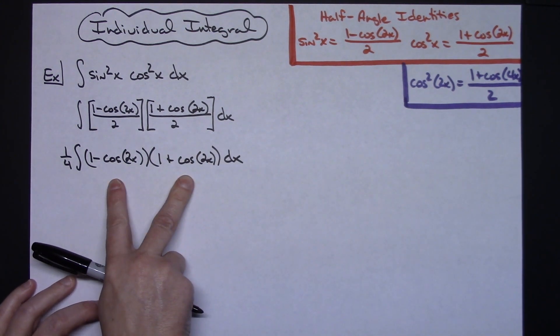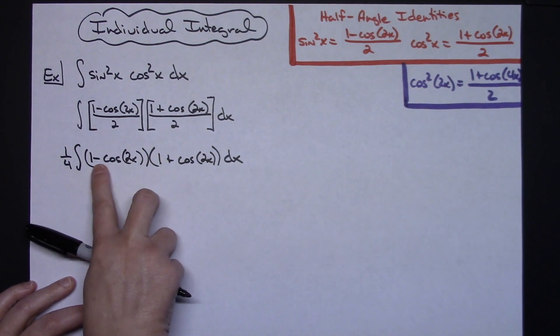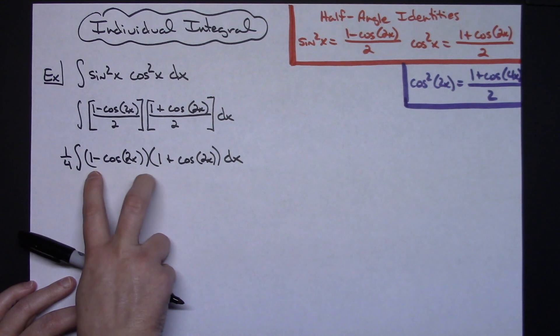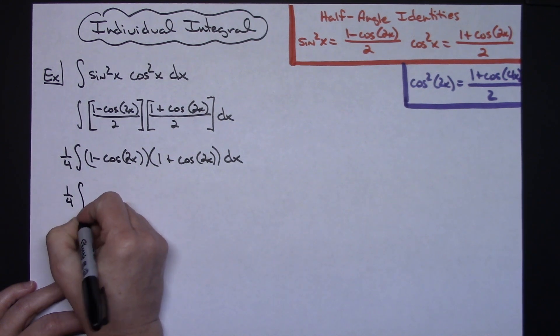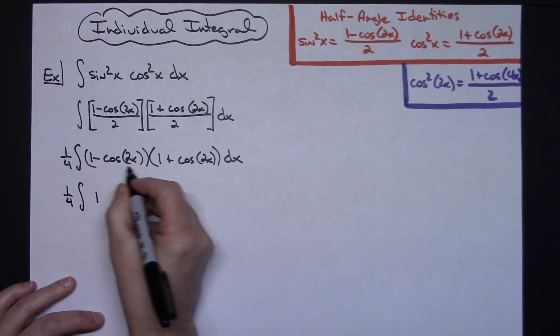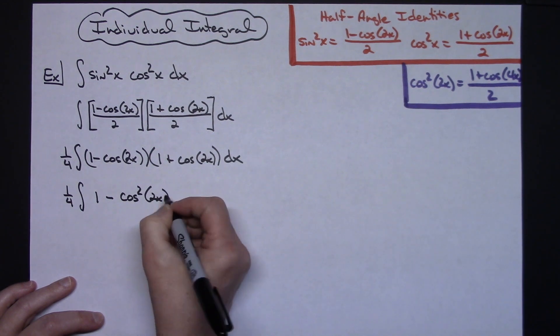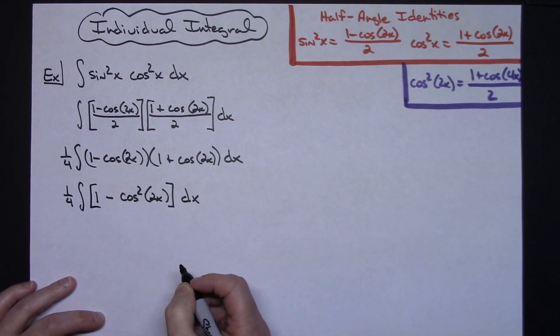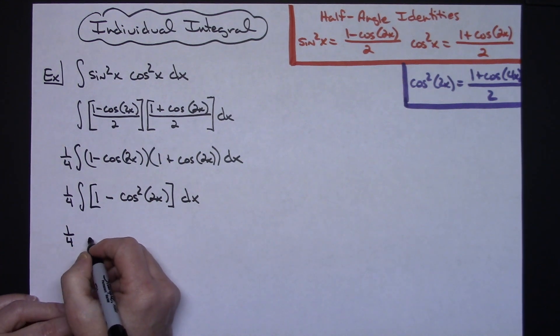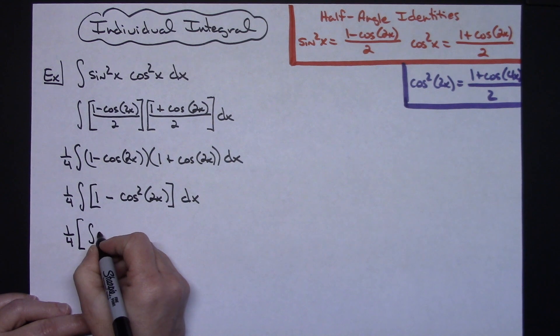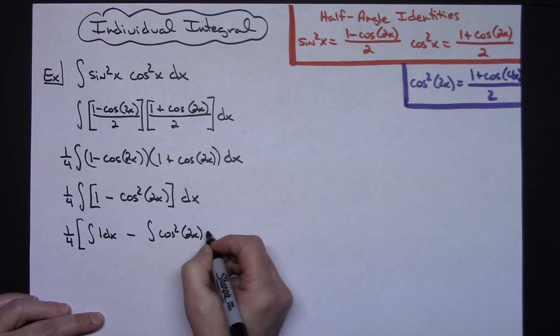At that point now, you can look at this as being a product that when I multiply it together I get the difference of two squares. I've got a binomial here with a minus, a binomial here with a plus, and both the first and the second quantities are the same. So I'm going to go ahead and FOIL that out. I will have a 1 fourth times the integral of 1 dx minus the integral of cosine squared 2x dx.